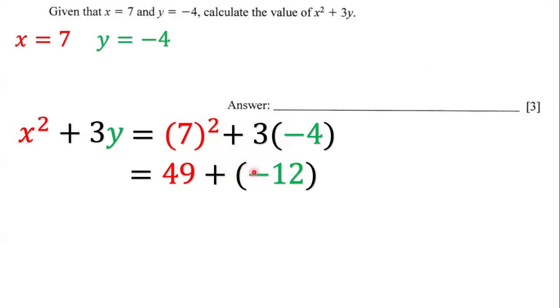Indeed, a positive times a negative is definitely a negative. And so we have 49 minus 12 and 49 minus 12 is 37. And so that means that our answer here is 37.